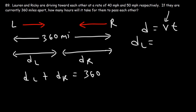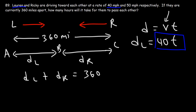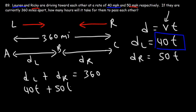Lauren's speed is 40 miles per hour, so let's replace V with 40. The time that it takes for Lauren to go from point A to point B is the same time that it takes for Ricky to go from C to B, because they're going to meet up at the same time. So we'll just write T. The distance that Lauren travels is simply 40T. The distance that Ricky travels — he's traveling at a speed of 50 miles per hour — so it's going to be 50T.